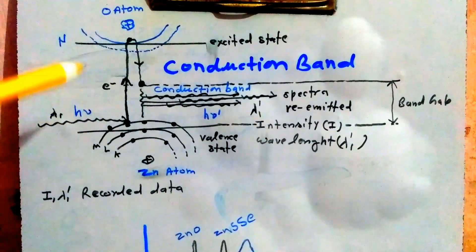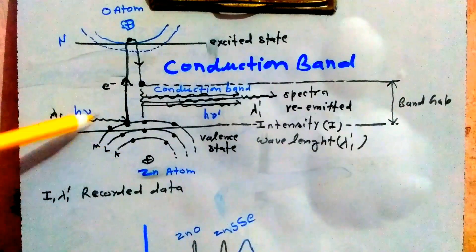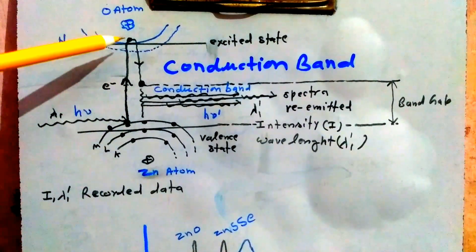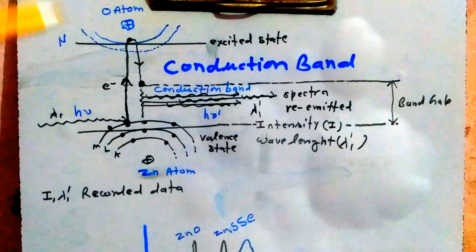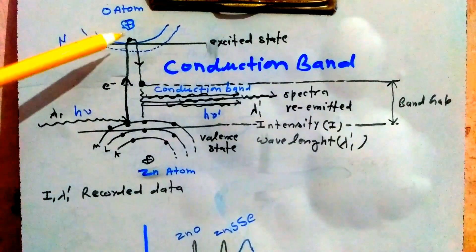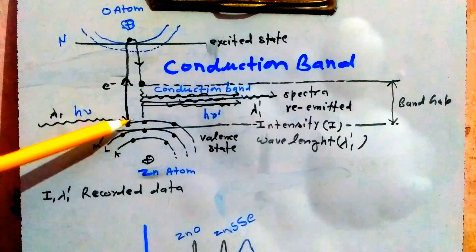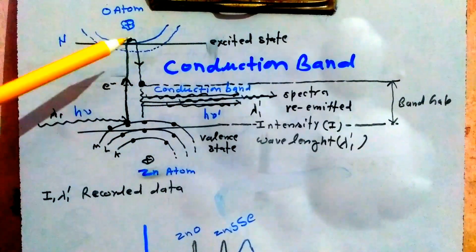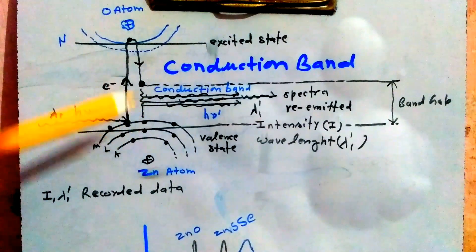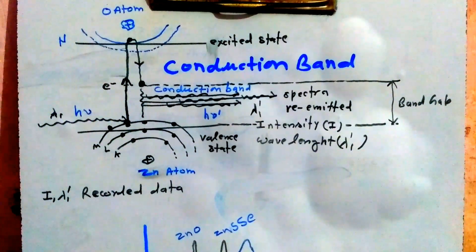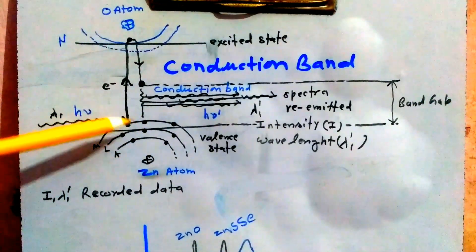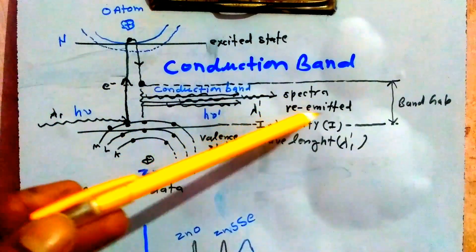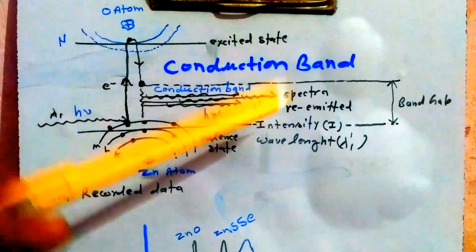A clearer picture of the photoluminescence phenomenon on or inside the sample: when the spectrum is absorbed by the sample, electrons gain energy from the source light and jump to higher energy shells into an excited state. They stay there for some time, then return back through the conduction band, falling down to their original shell and re-emitting the spectrum through this electron transition.